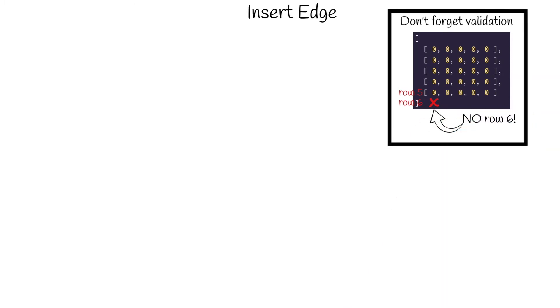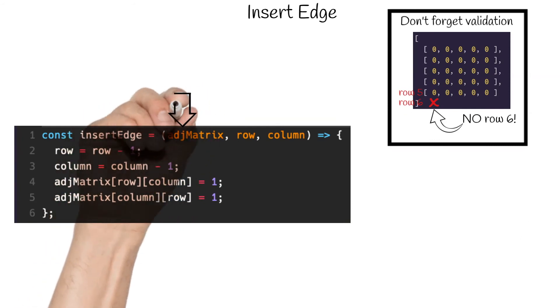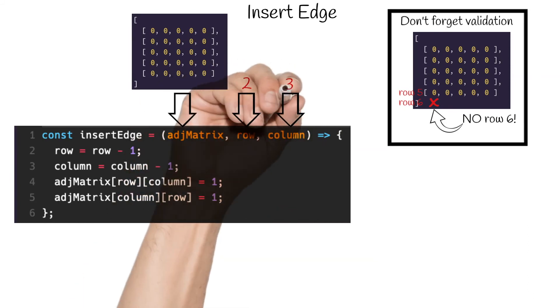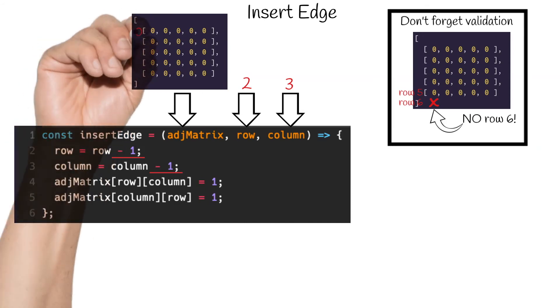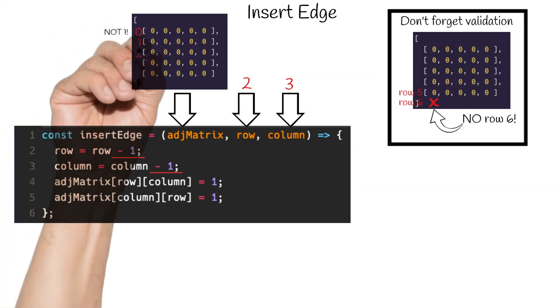Our insert function will look something like this. It will take an adjacency matrix as well as insert coordinates in the form of a row and a column as arguments. For this example, we will pass 2 as our row and 3 as our column. We will need to subtract a 1 from both the row and the column because the indexes of our arrays are 0-based. For example, if we want to access the first row of our matrix, the index is actually equal to 0 and not 1, hence our reason for subtracting a 1 from our row and column arguments.